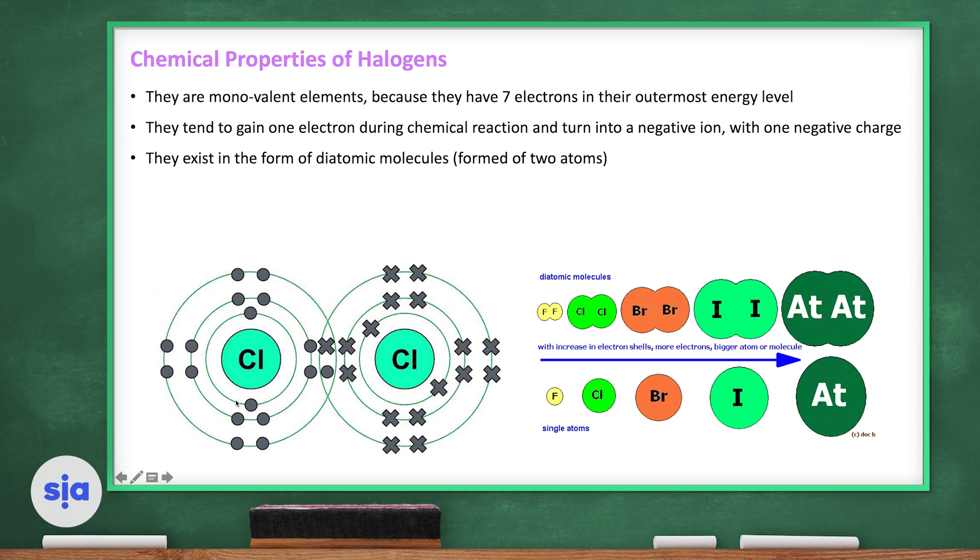When it reacts with another chlorine atom, it will gain one electron. So the total electrons in the outermost shell becomes 8 instead of 7. They will turn into a negative ion because the electrons will be more than the protons inside the nucleus. They form a diatomic molecule, a molecule formed of two atoms of the same kind.